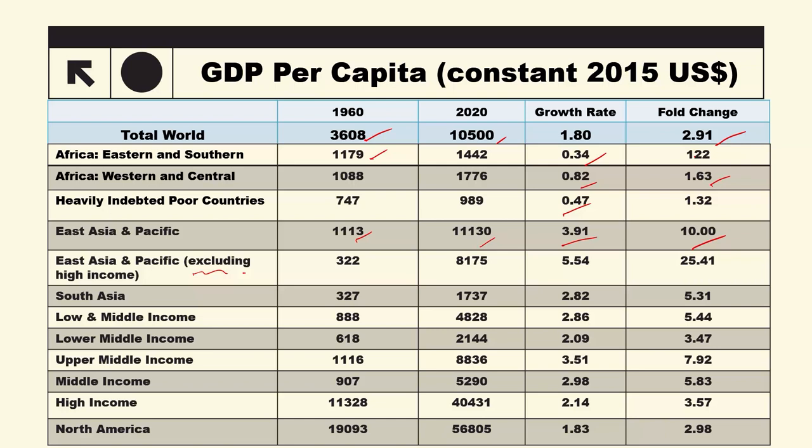Another region recorded an even higher growth rate of 5.54%, with per capita GDP increasing approximately 25 times. High income countries also show notable figures for this period.